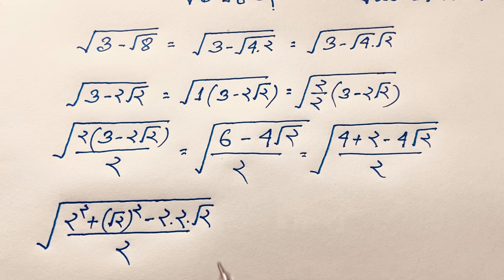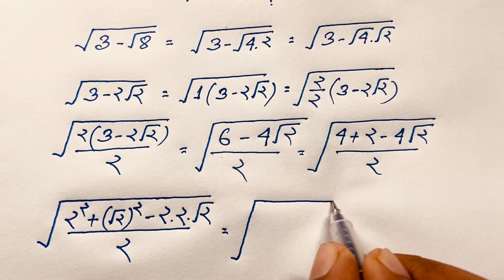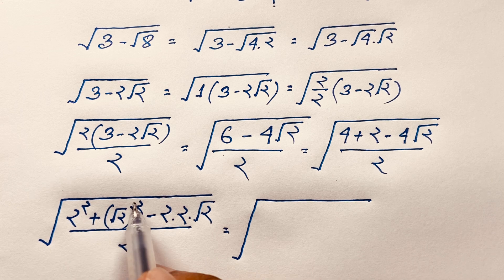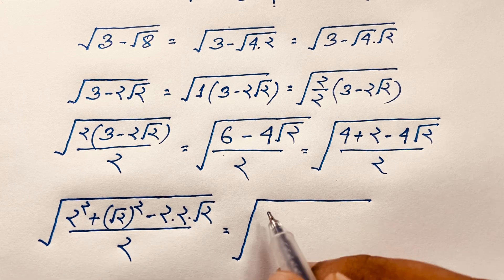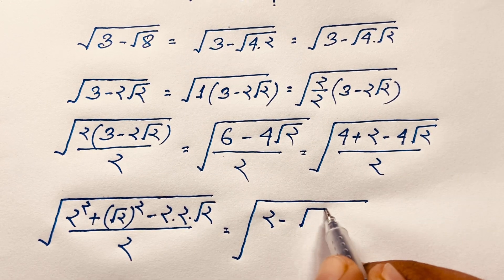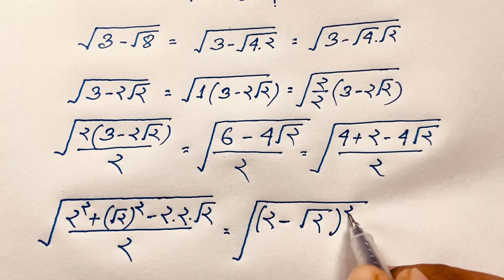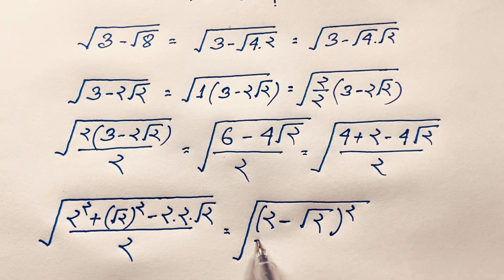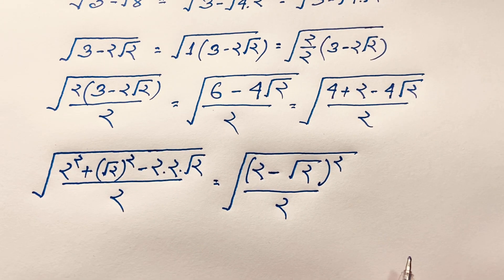Now you can see inside the square root we have a form of a squared plus b squared minus 2ab, which equals (a minus b) whole squared. So the expression becomes square root of (2 minus square root of 2) squared, all over 2.